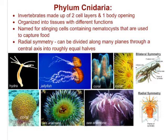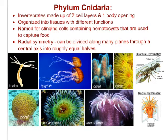The next phylum is Cnidaria — the C is silent, so it's pronounced Cnidaria. They are also invertebrates, made up of two cell layers, and they have one body opening. They are organized more so than the Porifera — they have tissues with different functions. If you look at the pictures, you're definitely going to start recognizing some of these organisms. Their name actually comes from the stinging cells contained in the organisms themselves. They have nematocysts; they sting their prey and use those to capture food. They also have radial symmetry.